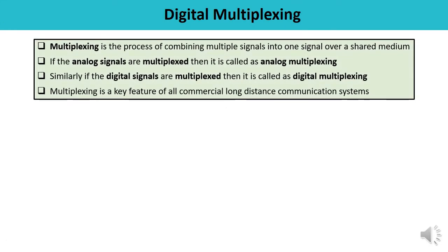Let us discuss about multiplexing. Multiplexing is the process of combining multiple signals into a single signal that is to be shared or transmitted via a shared medium. Multiplexing can be done for analog signals as well as for digital signals. If analog signals are multiplexed, then the type of multiplexing is known as analog multiplexing. Similarly, when digital signals are multiplexed, then the type of multiplexing is digital multiplexing.